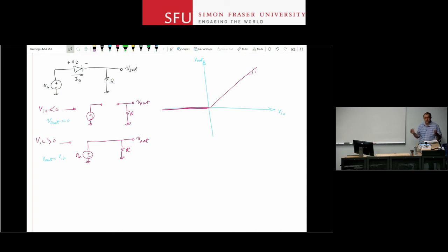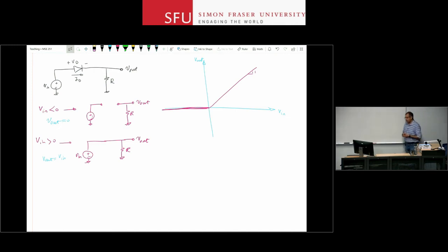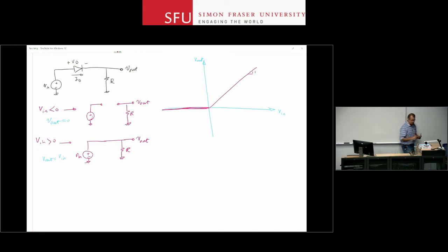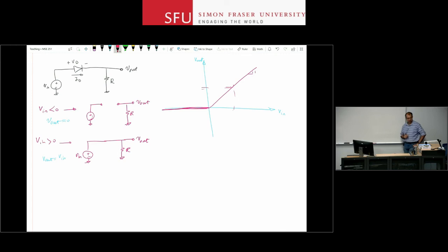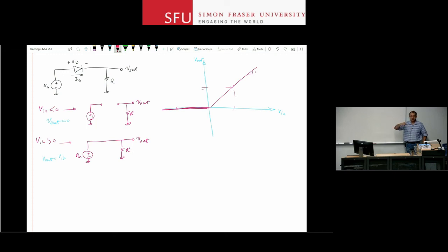Someone might ask: Vin sweeping from very negative to very positive never happens in practice — you deal with fixed or time-varying voltages. The point is that once you have the characteristic curve, it makes life much easier: you can immediately read off Vout for any Vin. For nonlinear circuits, you may not even have a closed-form expression for all Vout values, so the curve helps understand voltage ranges.